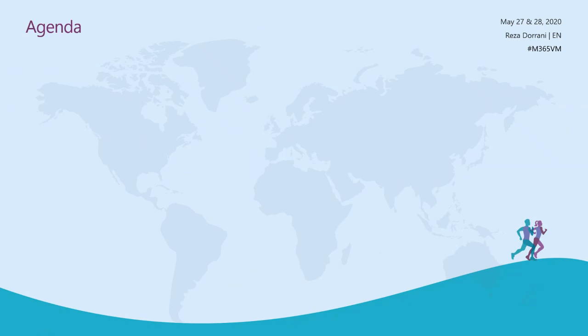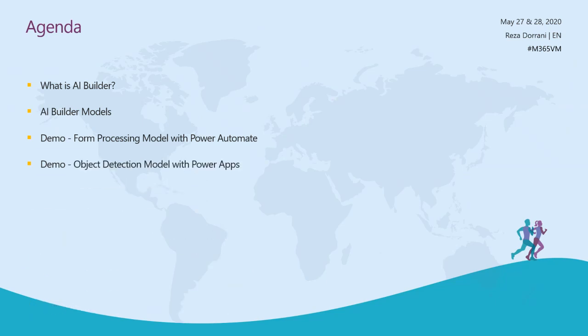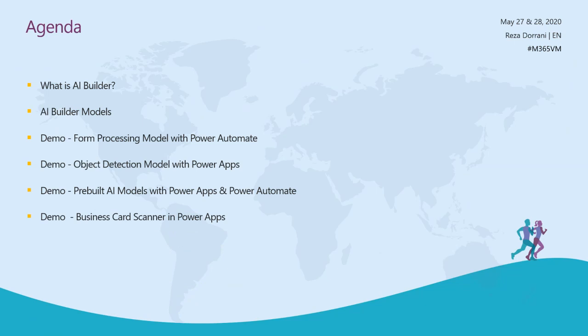Let's get into the session agenda. First, what is AI Builder? We will look at the different models available as part of AI Builder. Next, we will look at a demo using the form processing model along with Power Automate. Then the next demo will be the object detection model with Power Apps. We will also look at some of the productivity models — the pre-built models — with Power Apps and Power Automate, including the business card scanner, which is one of my favorites that I use a lot.